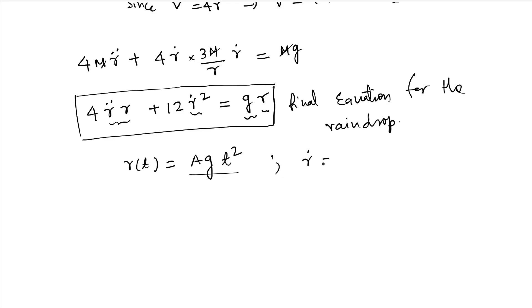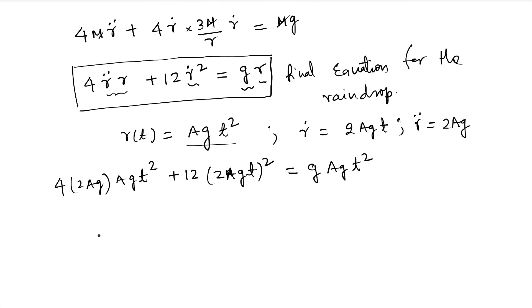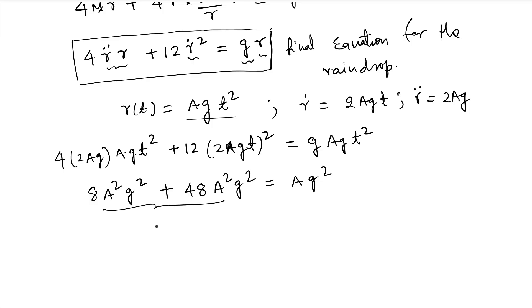So if r is this, then r dot is 2 a g t and r double dot is 2 a g. Therefore, this equation will become 2 a g and r is a g t square plus 12 times 2 a times 2 a g t square equal to g a g t square. Now we have t square everywhere. So we can cancel t square everywhere. So we can cancel t square and then if we expand, it will become 8 a square g square plus 48 a square g square and a g square.